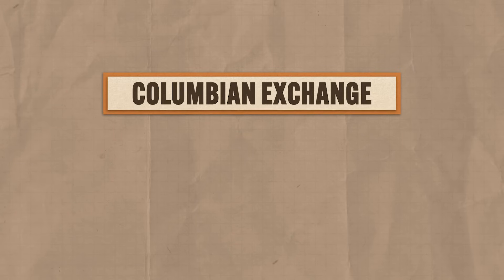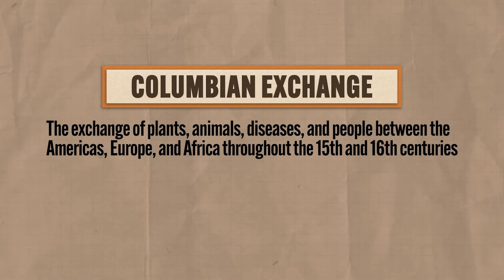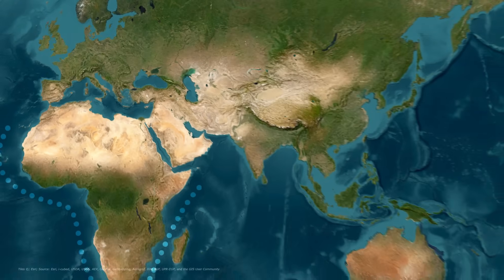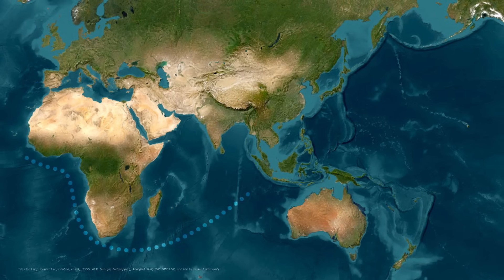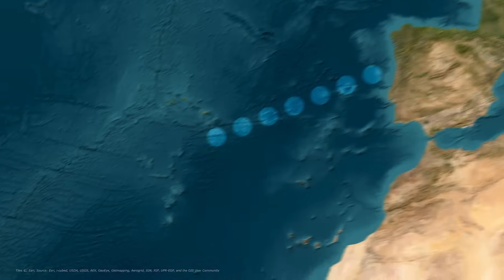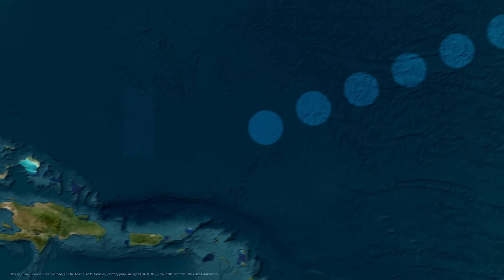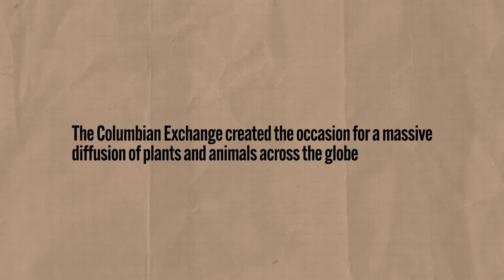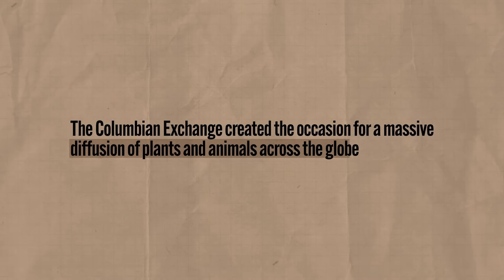The most dramatic example of agricultural diffusion occurred in the process known as the Columbian Exchange in the 15th and 16th centuries. By definition, this refers to the exchange of plants, animals, diseases, and people between the Americas, Europe, and Africa. Europeans were sailing all over the world trying to trade and assert their power, and eventually sailed west across the Atlantic thinking they'd find a route to Asian trade markets, but ended up running into two giant continents previously unknown to Europe. This created the occasion for a massive diffusion of plants and animals across the globe.